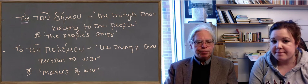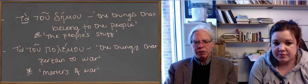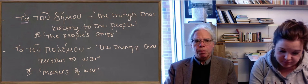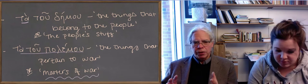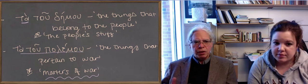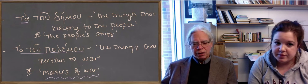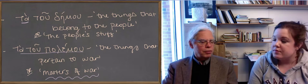So tatu demu means the things that belong to the people, the people stuff. Or you could do tatu polemu, where polemu is the genitive of the word for war. And it means the things that have to do with war, matters of war. So you can see there's a very flexible way of dealing with concepts in this language by using the article and using effectively its attributive position to take prepositional phrases, adverbs, and the genitives of other nouns, and make nouns out of them.